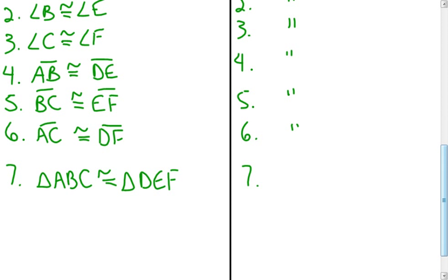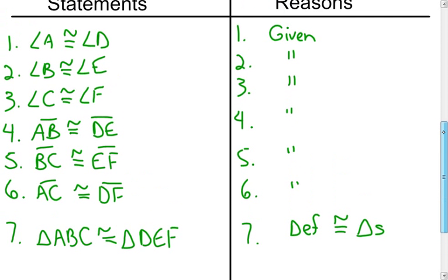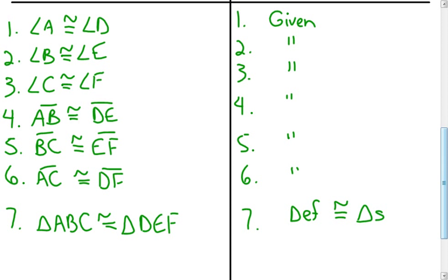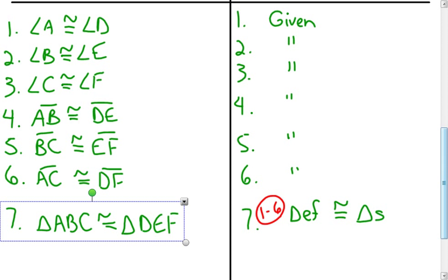Now I should be able to state what I'm trying to prove: triangle ABC is congruent to triangle DEF. The reason is the definition of congruent triangles — we need three sets of corresponding congruent angles and three sets of corresponding congruent sides, and we have all of that. For reference numbers, I look back: my three angles came from statements one through three, my three sides from statements four through six. So I needed statements one through six. Now that I've stated the triangles are congruent, I'm done with that proof.